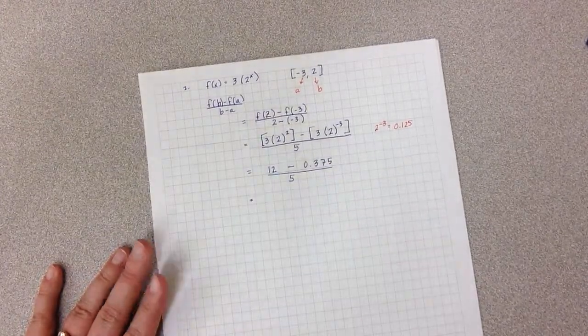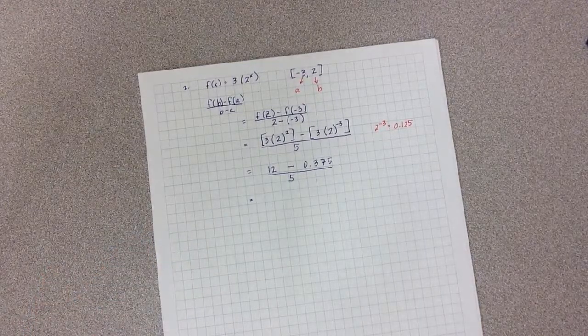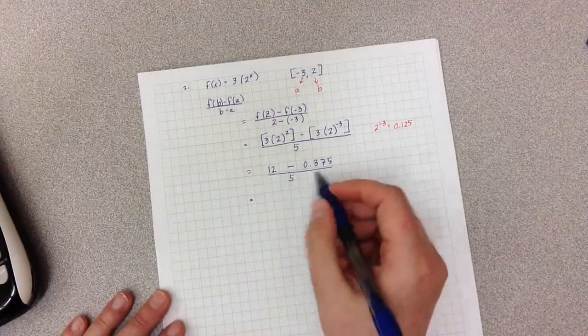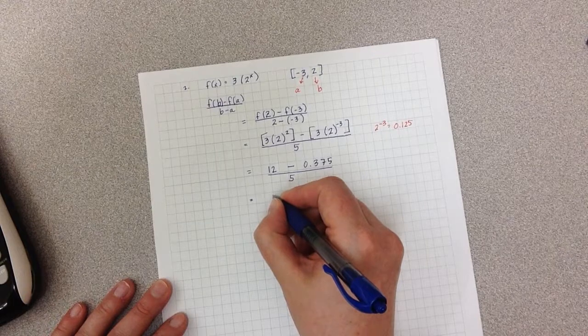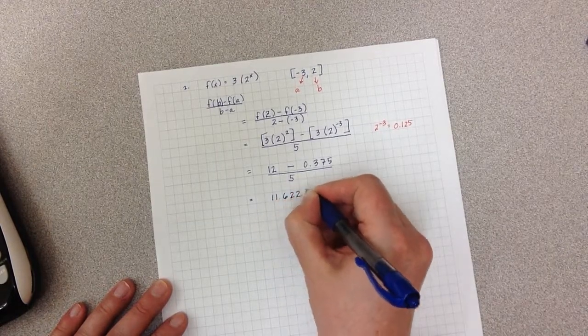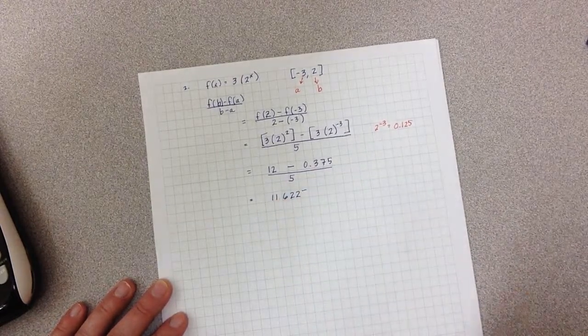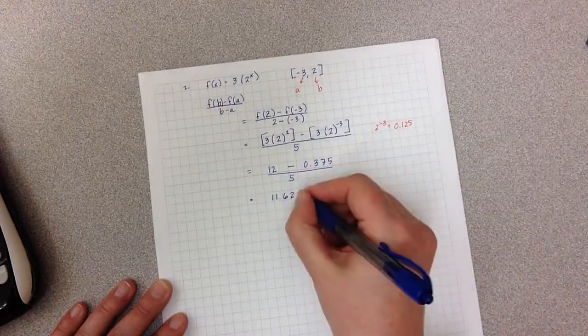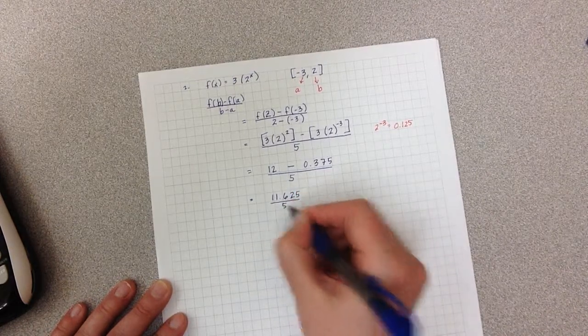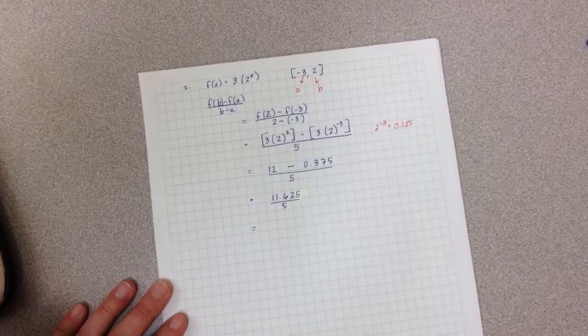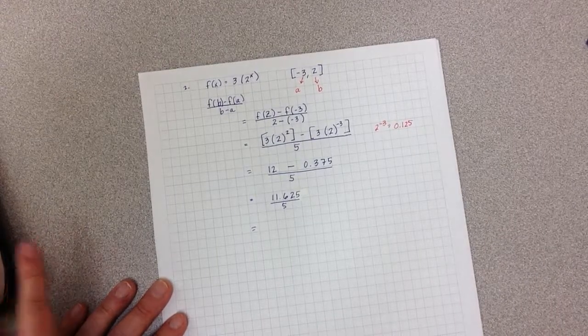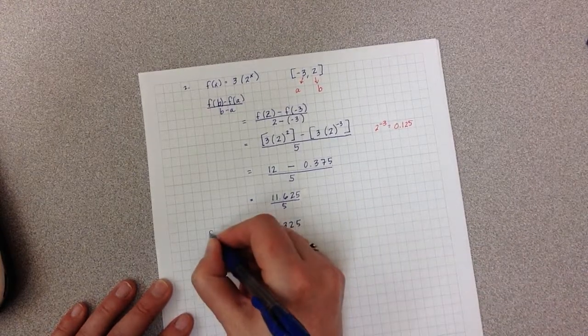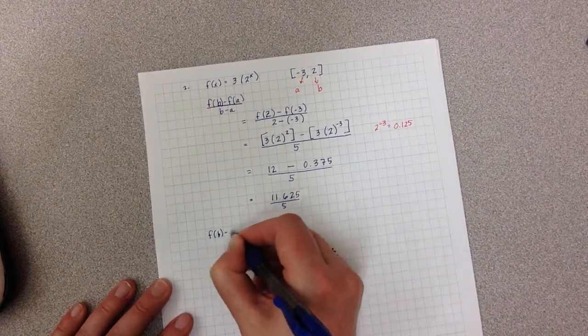I subtract my numerator from my denominator. Sorry, I subtract my 12 minus 0.375, which gets me 11.625. And then I'm dividing by 5. Dividing 11.625 divided by 5 gets me 2.325.